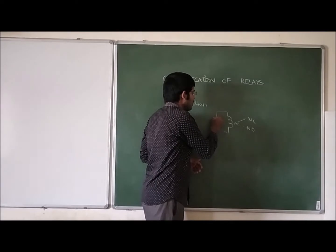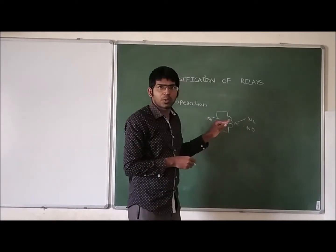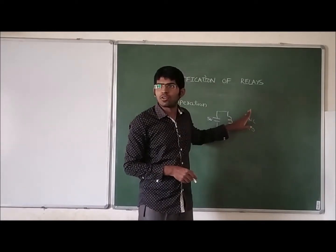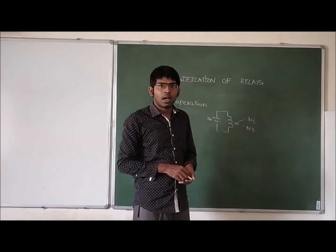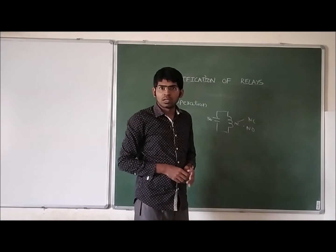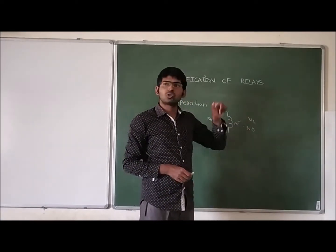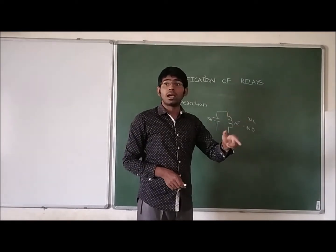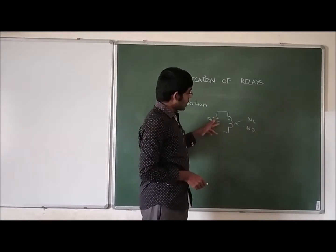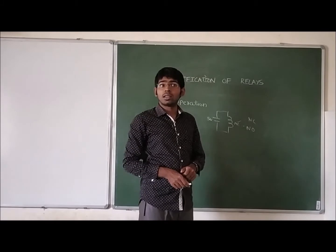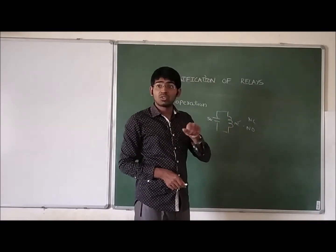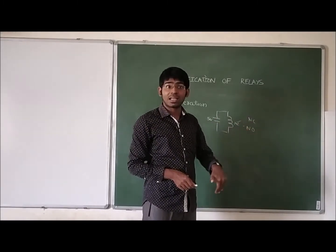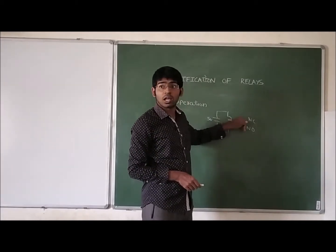For example, if it is a 5-volt relay, when we provide 5 volts supply, that supply moves the mechanical contact from normally closed to normally open. But why does the mechanical contact move? Because when we give 5 volts supply, current flows through the relay. Because of that current, a magnetic field forms, and this magnetic field attracts the armature or mechanical contact from normally closed to normally open.